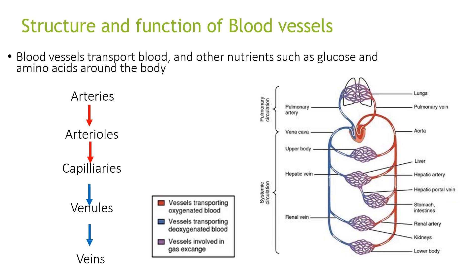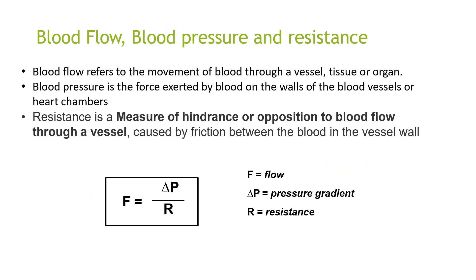Blood flows from arteries to arterioles, to capillaries, to venules, to veins. The arteries and arterioles transport oxygenated blood. The venules and the veins transport deoxygenated blood, and the capillaries are involved in gas exchange.